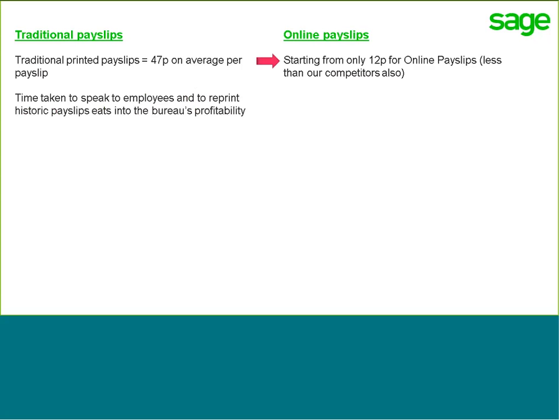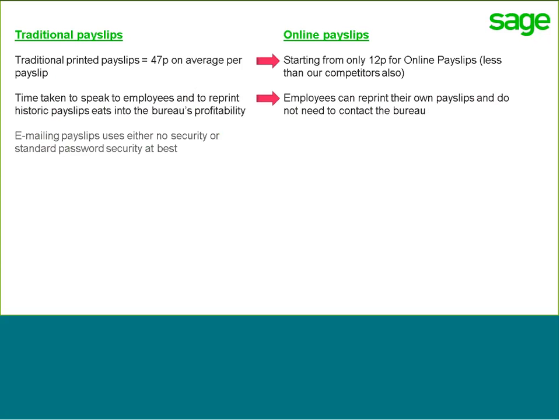In addition to this, the time taken to deal with employee queries can be quite cumbersome, but with online payslips, employees can access them anytime they want, and if they require a paper copy for whatever reason, they can do so through the portal. A lot of companies have been emailing payslips recently, but the data protection authorities are looking at whether that is a legitimate way of sending payslips, even if they are password protected. So, to safeguard any potential breaches, online payslips uses the same encryption as online banking, so you can be confident that payslips are hosted securely.